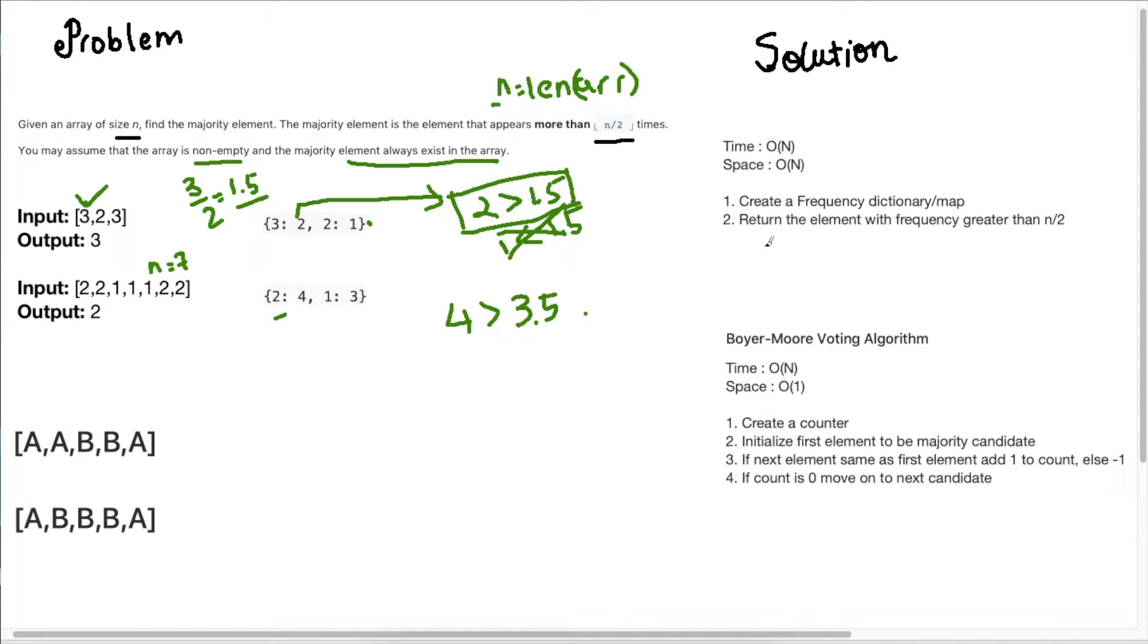So this solution is pretty straightforward. We just create our dictionary and then iterate over the dictionary and return the element with our highest frequency. And the time complexity for this is O(N). Okay, let's quickly look at this code. And then we can see how we can optimize this solution further.